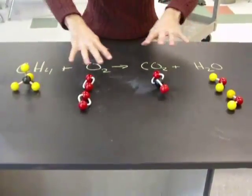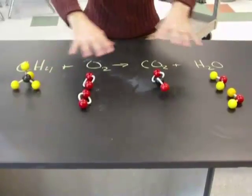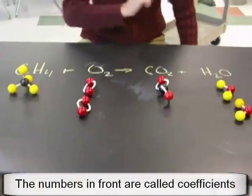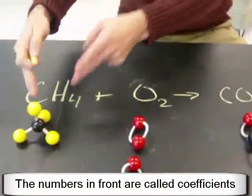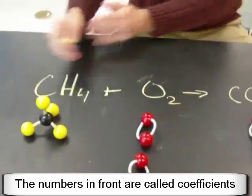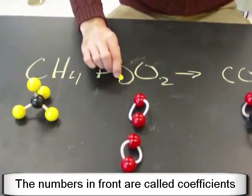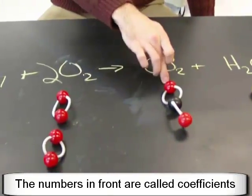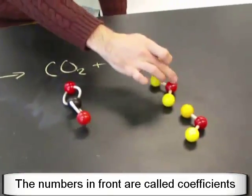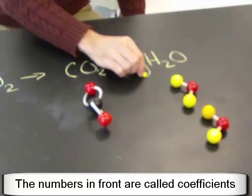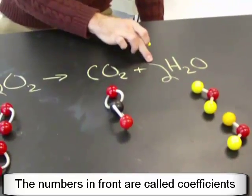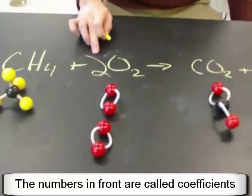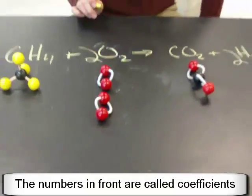So now that we've visually balanced the equation, let's put the numbers in front of our compound with our chalk. So I have one CH4 molecule here. I have two oxygen molecules here. I have one carbon dioxide molecule here. And I have two water molecules here. So I put a two in front of the H2O and I put a two in front of the oxygen.